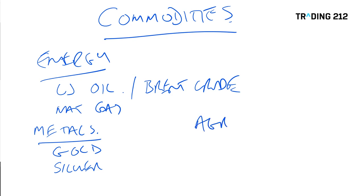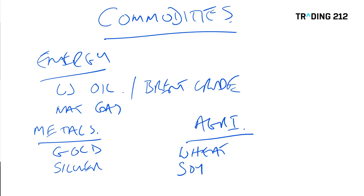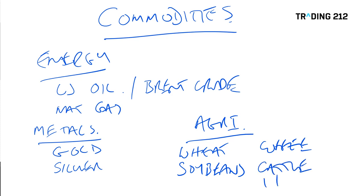And then finally we have a really wide grouping: agricultural commodities. You have things like wheat, soybeans, coffee, and then you have livestock — cattle, hogs, that sort of thing.